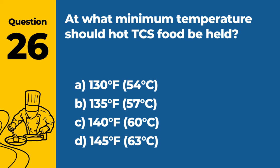Question 41: How can a restaurant reduce the risk of salmonella contamination? A. By cooking all foods to high temperatures. B. By using only pre-packaged foods. C. By washing hands and surfaces frequently and cooking poultry and eggs thoroughly. D. By serving only vegetarian dishes. Answer: C. By washing hands and surfaces frequently and cooking poultry and eggs thoroughly. Reducing the risk of salmonella contamination involves maintaining good hygiene, including frequent handwashing and surface cleaning, and ensuring poultry and eggs are cooked thoroughly.